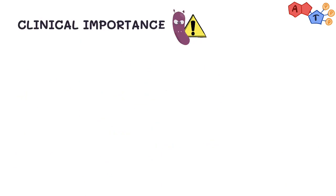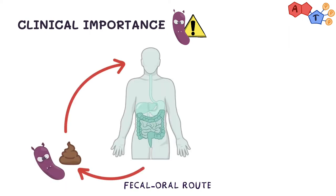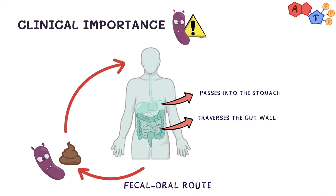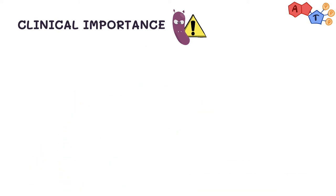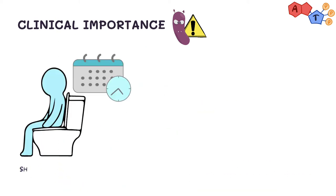Yersinia infection is usually transmitted via the feco-oral route. The pathogen passes into the stomach, traverses the gut wall, and localizes in the lymphoid tissue and mesenteric lymph nodes. One of the key features of Yersinia enterocolitica is that it is shed in the stool for around 3 months after the symptoms have subsided.